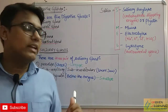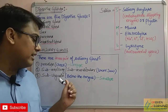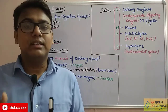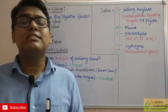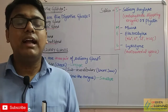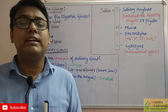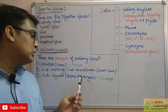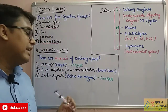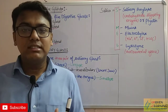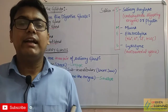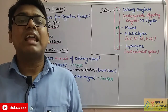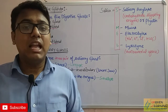Sub means below, lingual means tongue — so below the tongue. The sublingual gland is present below the tongue. That is why we call it sublingual, and it is the smallest salivary gland. So we have three salivary glands: parotid, sub-mandibular, and sublingual.